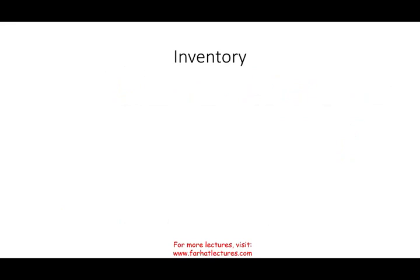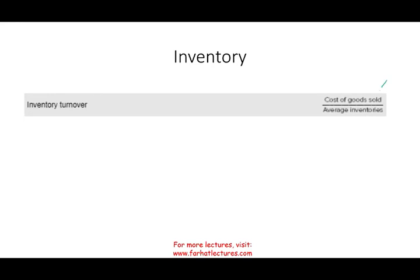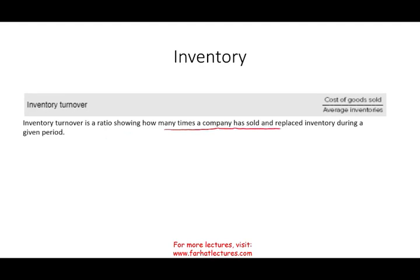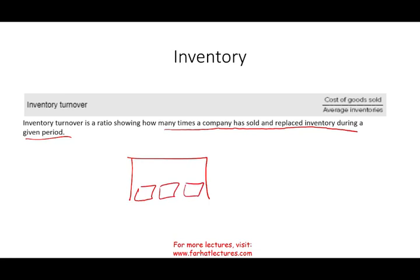Now let's look at another asset utilization ratio: inventory turnover. We compute it by taking cost of goods sold — an income statement account — divided by average inventory, which is beginning-of-period inventory plus end-of-period inventory divided by two. Same concept: we use an average in the denominator because inventory is a balance sheet account. This ratio shows how many times a company has sold and replaced its inventory during a given period — think of a store filling its shelves, selling everything, refilling, and selling again. We want this turnover to be high, assuming we are selling at a profit.